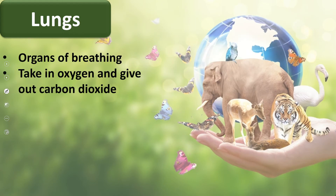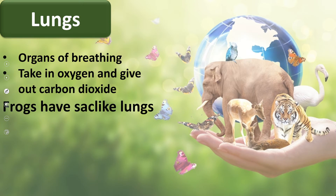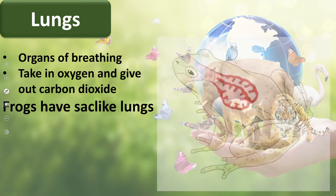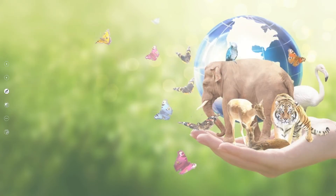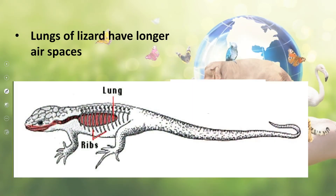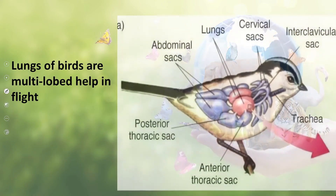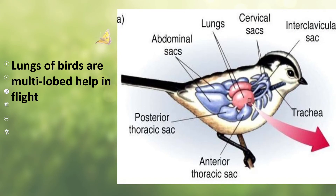Lungs are the breathing organ — they help in breathing. Lungs are sack-like, and there is some variation in them among different animals. Frogs have lungs inside their body. Lizards have larger air spaces inside their lungs so they can breathe easily even in dry land environments. Birds have multi-lobed lungs so they can breathe easily while flying in the air.